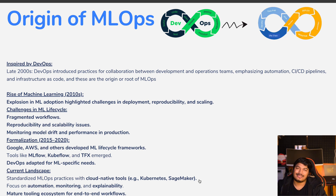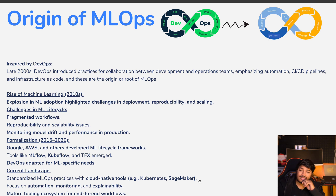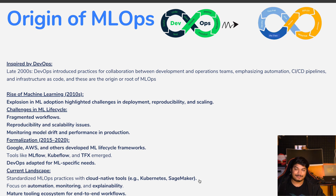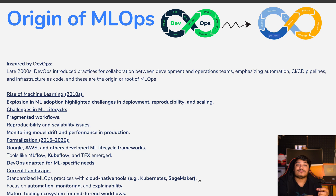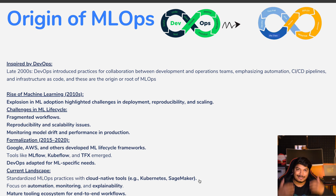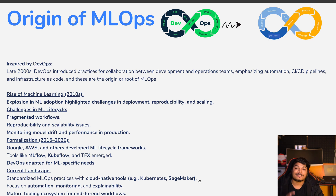From 2015 to 2020, all the major players like Google, Amazon, AWS, and other big companies started adopting ML and developing their own ML frameworks. Those are frameworks we use today — for example, MLflow, Kubeflow, TFX — all of these emerged. In this series, we are going to cover all of that.